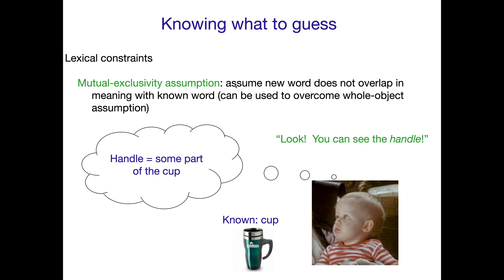Typically there are just subtle differences in meaning. Let's think of words like daddy, papa, or father. They all kind of mean the same thing — yes and no. Daddy has this sense of endearment. Papa maybe has a different sort of dialect association, whereas father is more formal. There are these subtle differences in meaning.